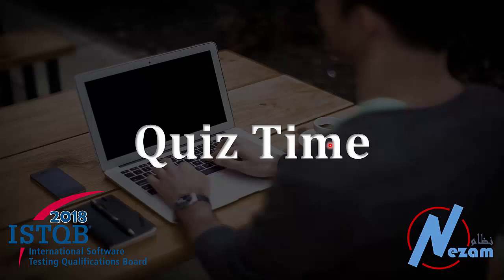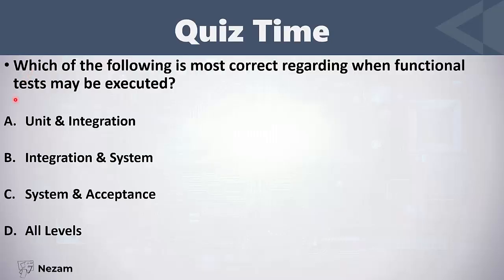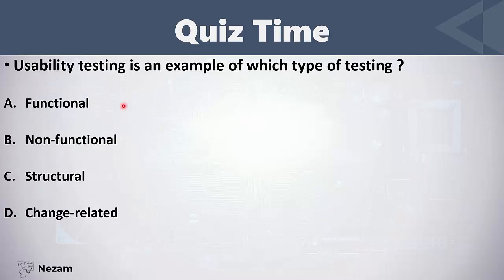Let's solve some questions on the types of testing. Which of the following is most correct regarding when functional tests may be executed? The question is asking about the levels of testing at which functional testing is executed. Functional testing is performed inside all test levels, from unit testing until acceptance testing. The same is true for non-functional testing — it is also performed at all test levels.